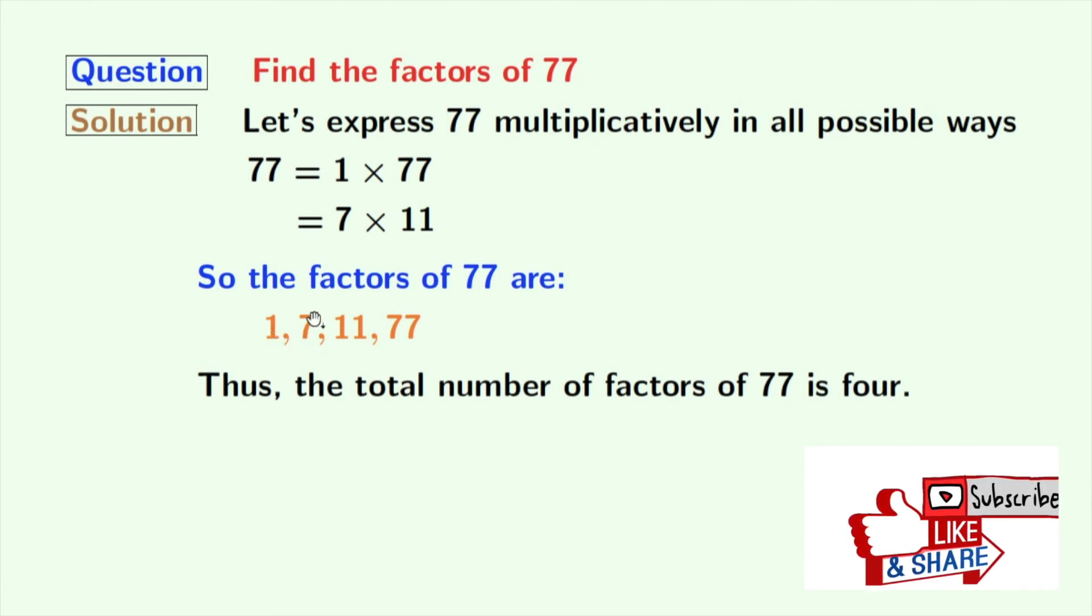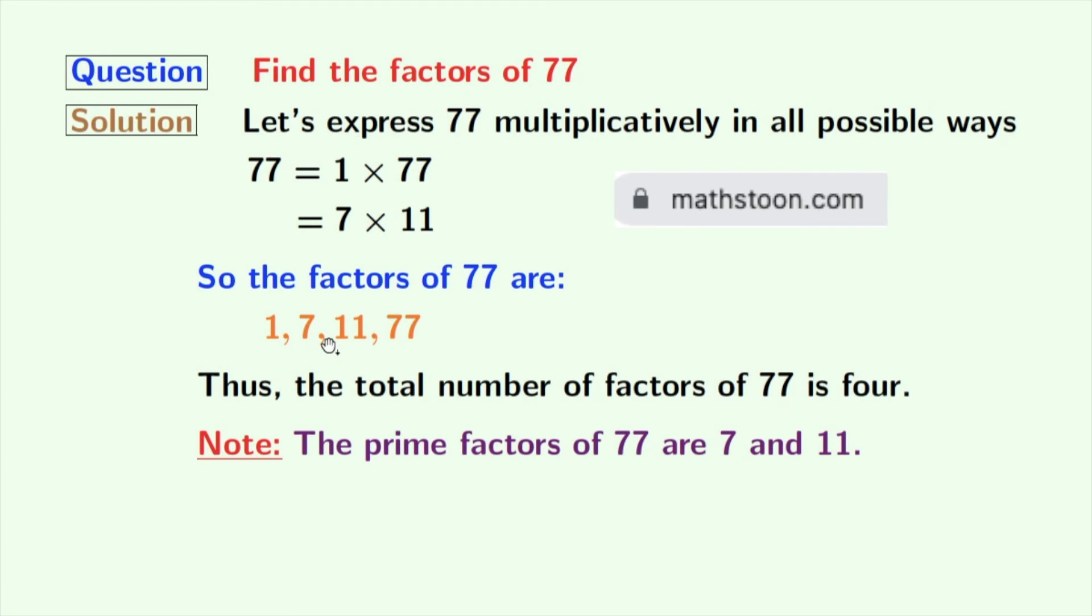Now if we look at these factors, we can see that 7 and 11 among these numbers are prime numbers. Because these two numbers do not have any divisor other than 1 and that number itself. So we can see that the prime factors of 77 are 7 and 11.